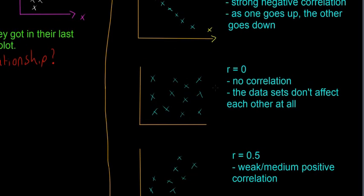Next one, R is equal to zero. In this case there's absolutely no correlation. The X's are all over the place, which means the data sets don't affect each other at all. So there's no relationship between these two data sets. That's an example of what R equals zero looks like.